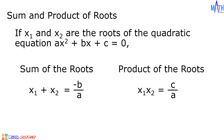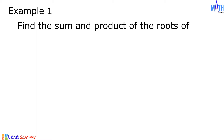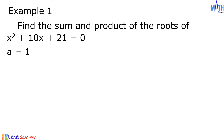Let us have some examples. Example number 1: let us find the sum and product of the roots of x² + 10x + 21 = 0. This quadratic equation is written in standard form, where the value of a is equal to 1, b is equal to 10, and c is equal to 21.